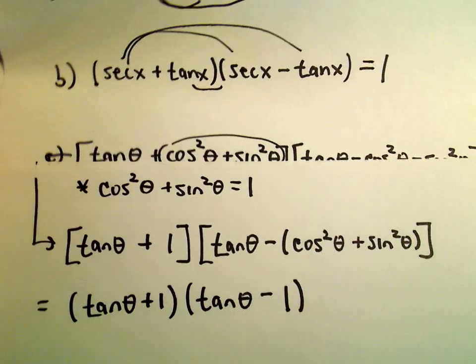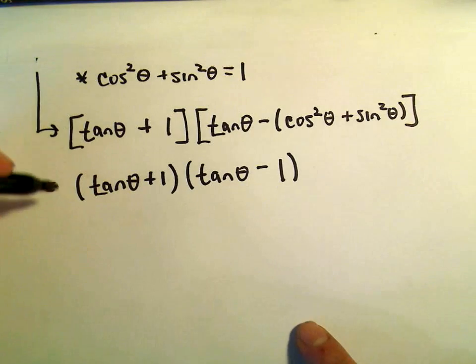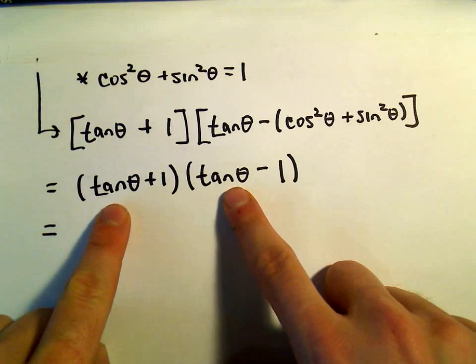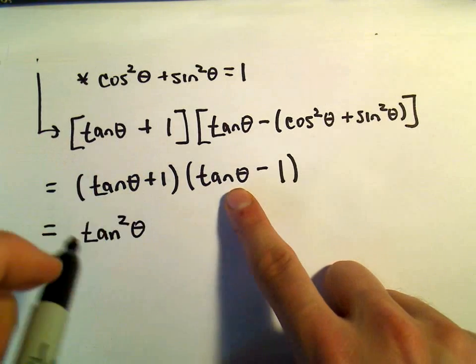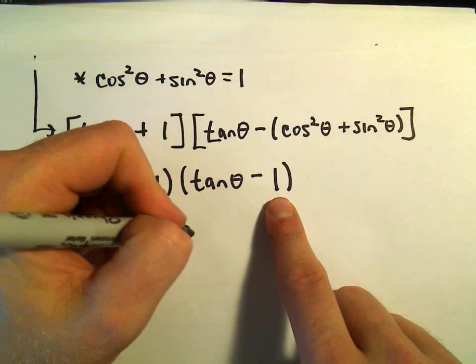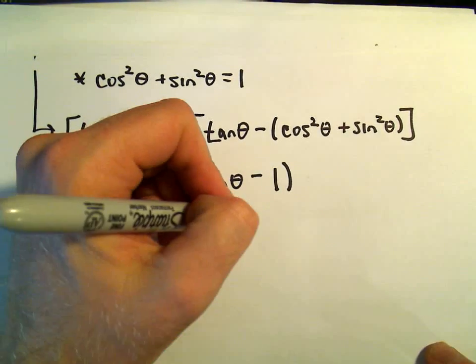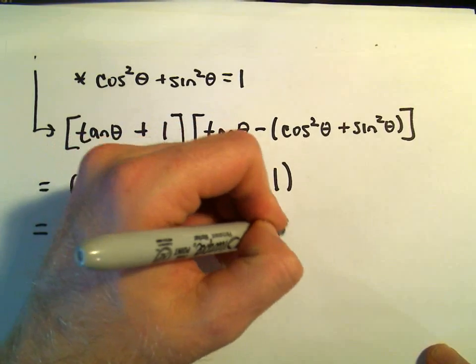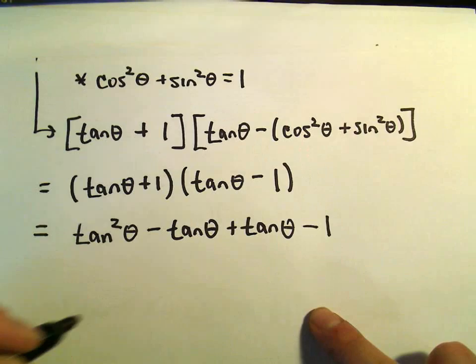And now what I'm going to do is just simply multiply this stuff out. So we're going to have tangent of theta times tangent of theta, which is going to give us tangent squared theta. We'll have tangent times negative 1, that's going to give me a negative tangent theta. We'll have positive 1 times tangent theta, so that's just plus tangent theta. And then we have plus 1 times negative 1, so that's just going to be a negative 1.